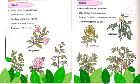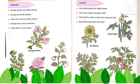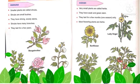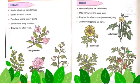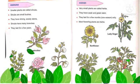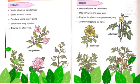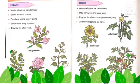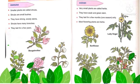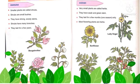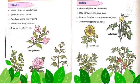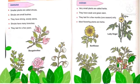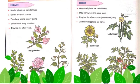Now turn your page to page number 56. We will revise about shrubs. Smaller plants are called shrubs. Shrubs are small bushes. They have a strong woody stem. Shrubs have many branches and they last for a few years.